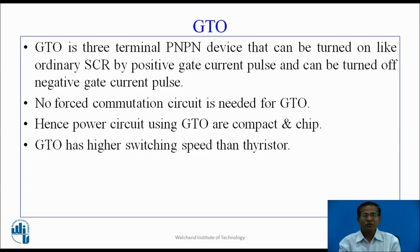No forced commutation circuit is needed for the GTO. Hence, power circuits using GTO are compact and cheap. GTO has higher switching speed than thyristor; therefore, switching losses are more.